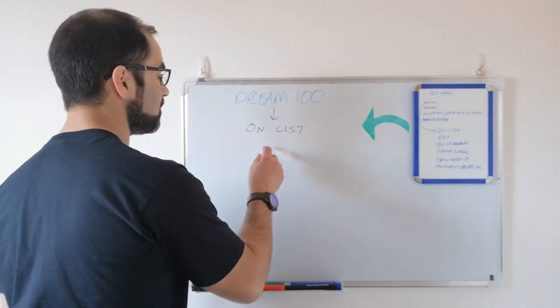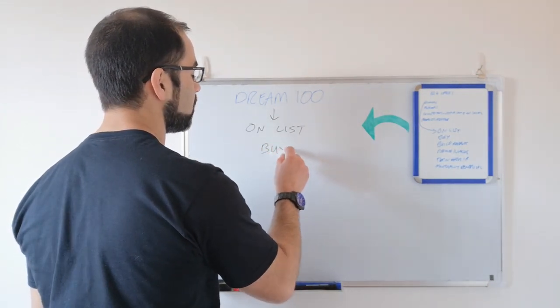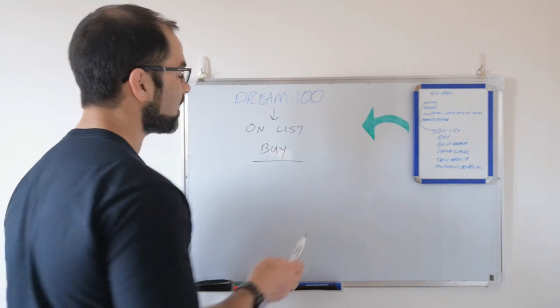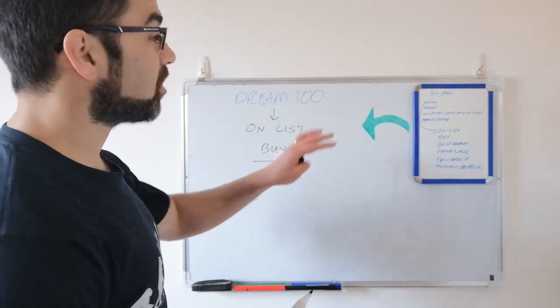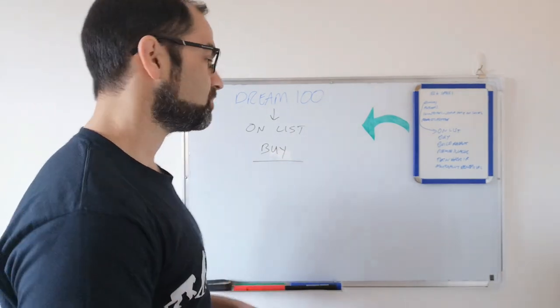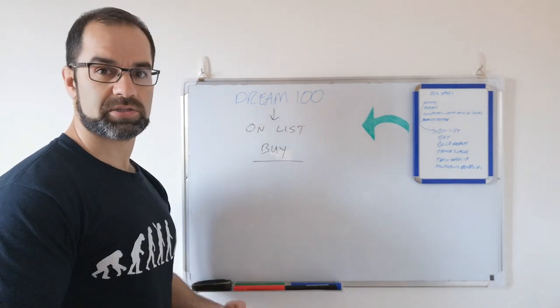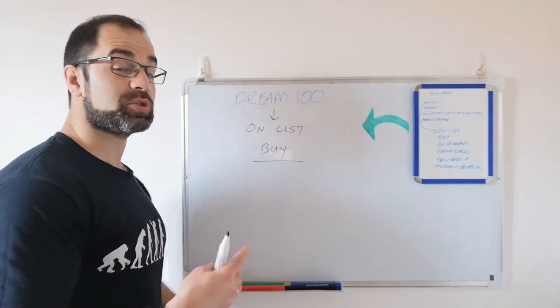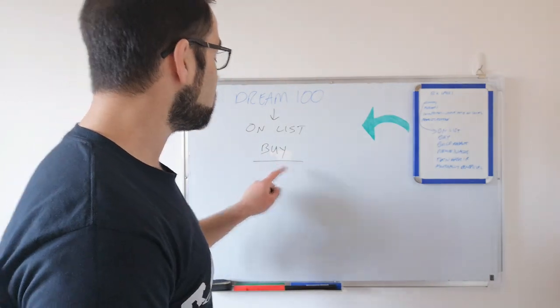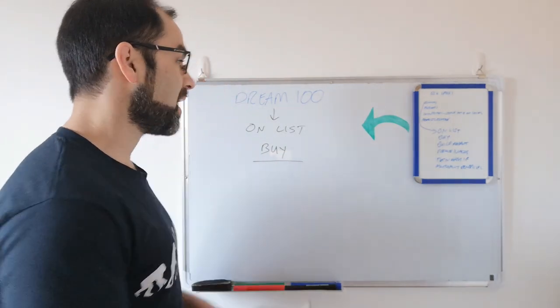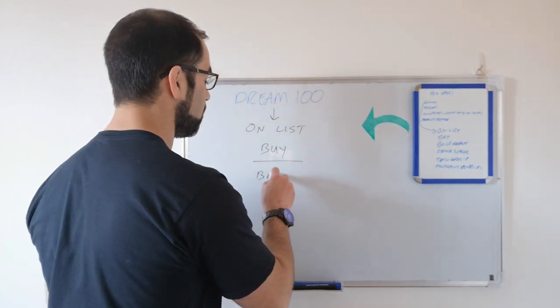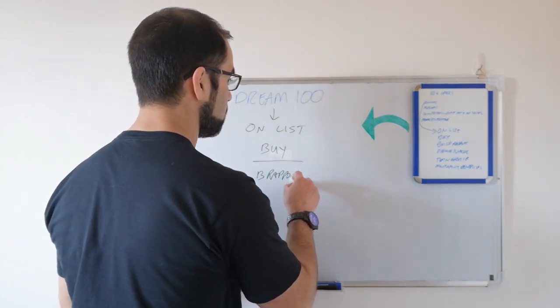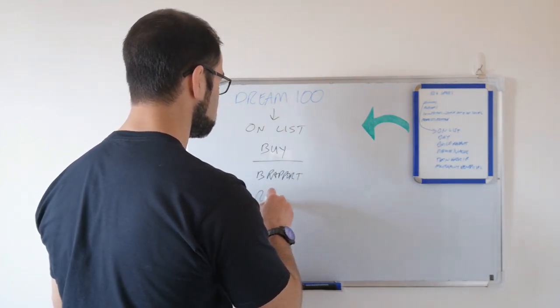Then I want you to buy—maybe not from all 100, but if you can buy something from the top 10 or top 20, buy their product. The reason you're going to do that is you want to get an insight into what's working with your audience. But you also want to build rapport and show results and value.